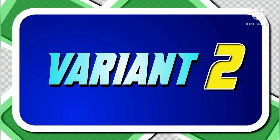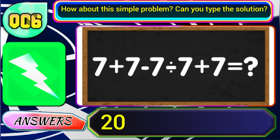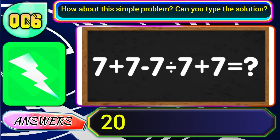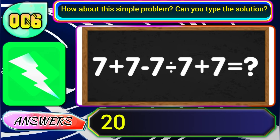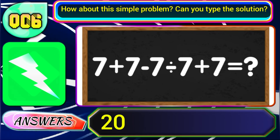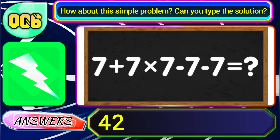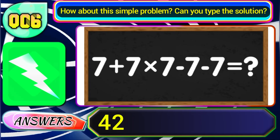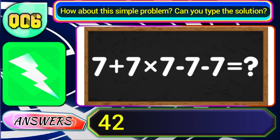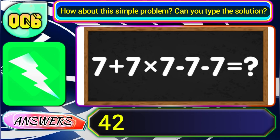Next in variant 2, if you get the equation 7 plus 7 minus 7 divided by 7 plus 7, then the answer will be 20. Now in variant 3, if you get the equation 7 plus 7 into 7 minus 7 minus 7, then the answer will be 42.